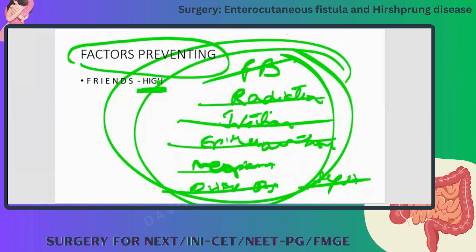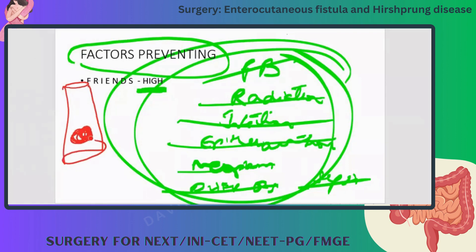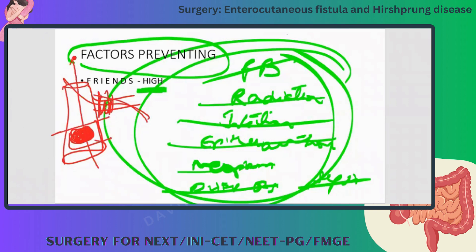D is distal obstruction. For example, if there is an obstruction here and a fistula here — if you correct the fistula but the obstruction remains, it will leak again because of the obstruction. So you must remove the obstruction and then correct the fistula, and then the fistula will heal on itself.